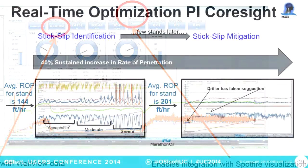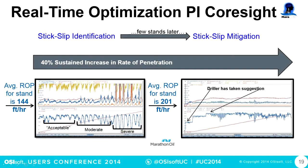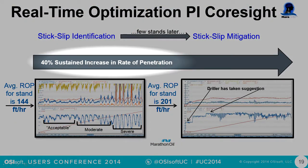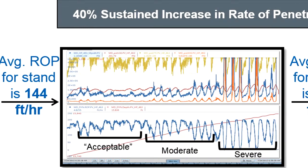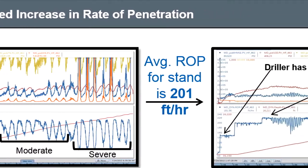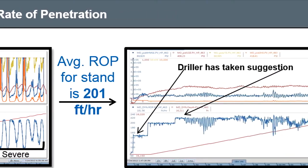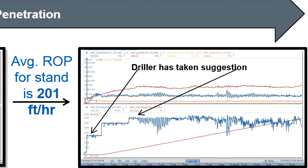Using PI Coresight, we were able to have a 40% sustained increase in rate of penetration, which is what we're trying to solve for. The better rate of penetration saves you more capital investment. Using Spotfire, we were able to take average ROP for a drilling stand from 144 feet per hour to 201 feet per hour.